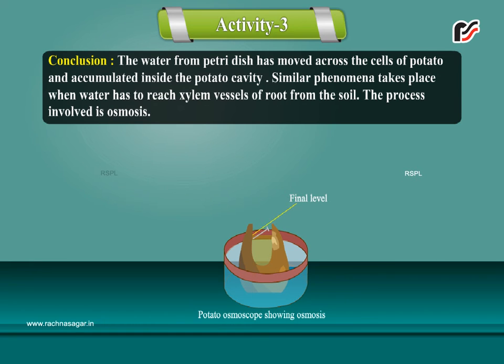Conclusion: The water from petri dish has moved across the cells of potato and accumulated inside the potato cavity. Similar phenomena takes place when water has to reach xylem vessels of root from the soil. The process involved is osmosis.